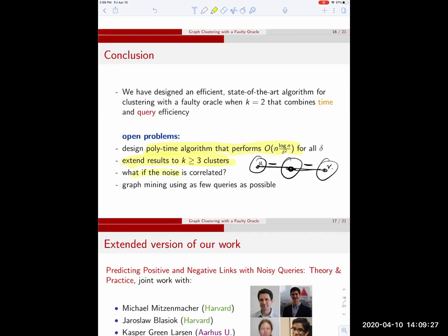What we've been thinking more about is realistically, the noise is not IID. How can we get better models that deal with this case and also perform graph mining with as few queries as possible?